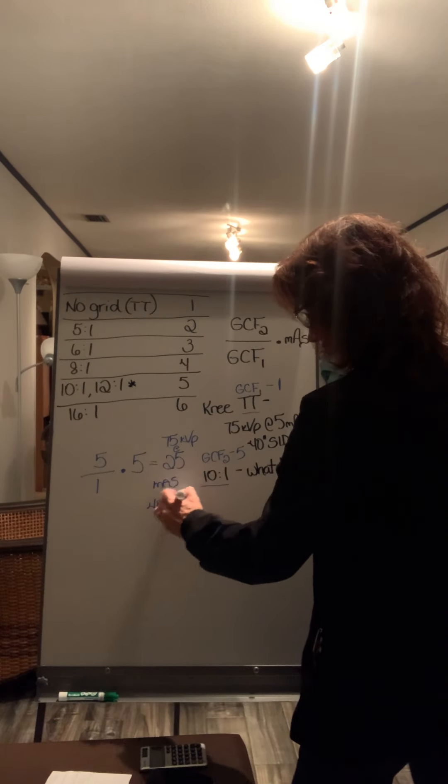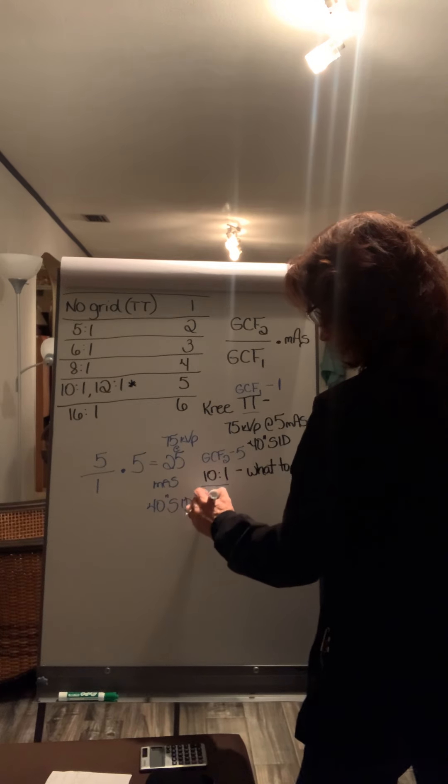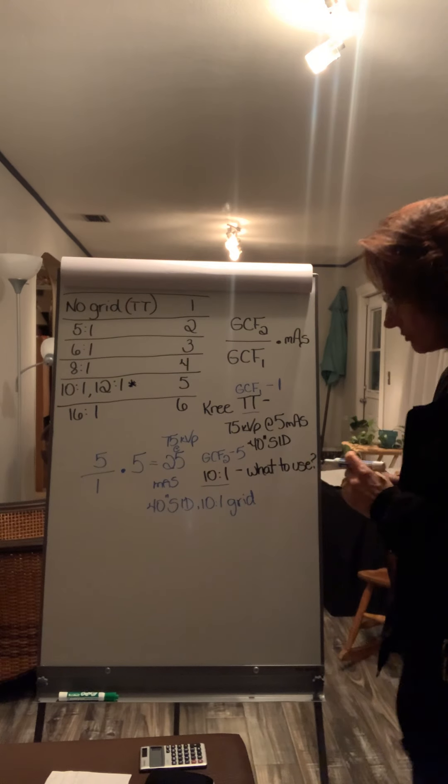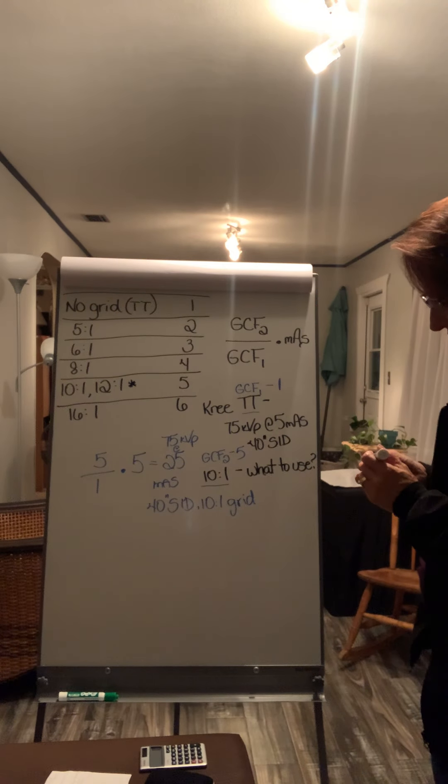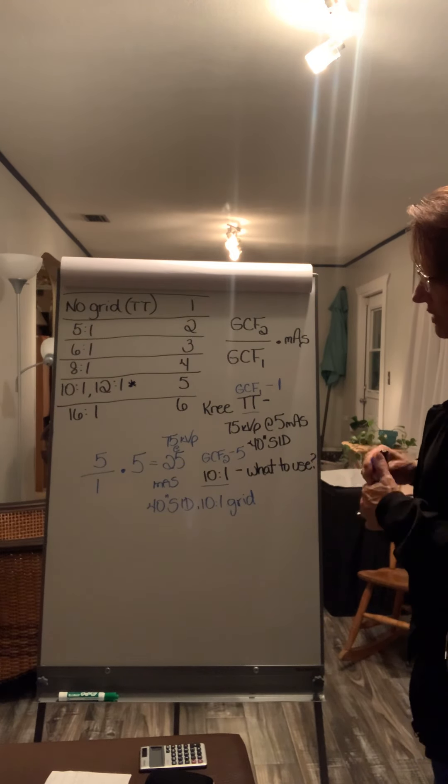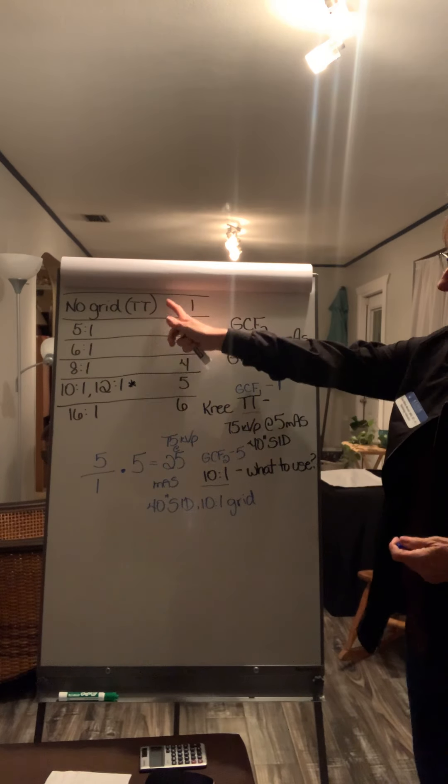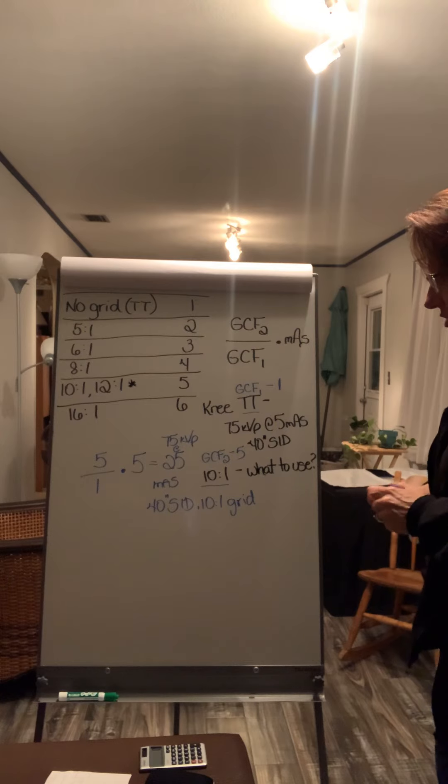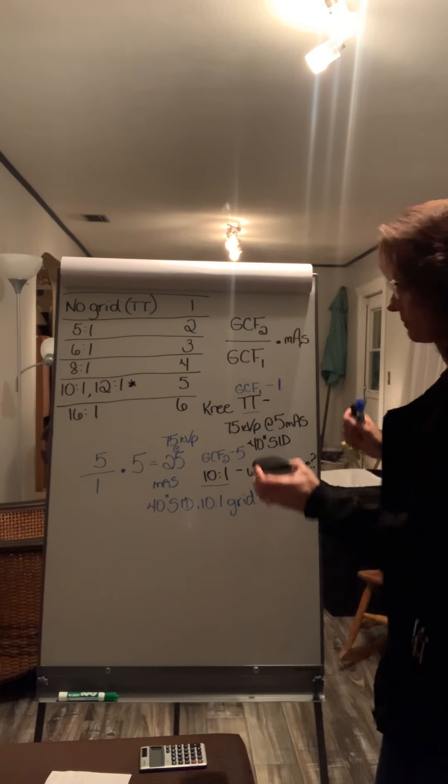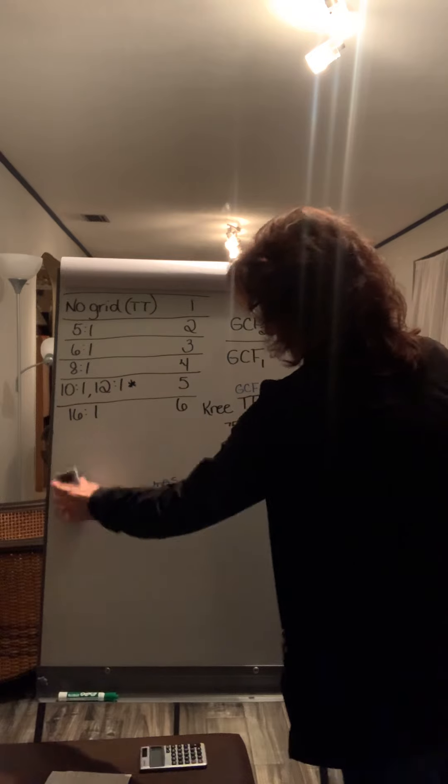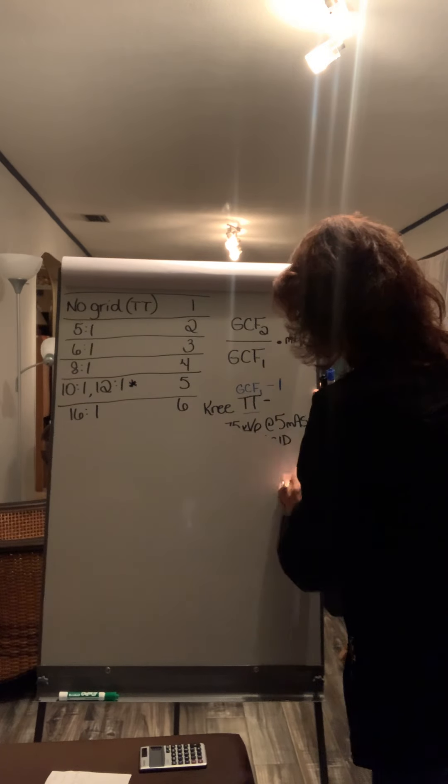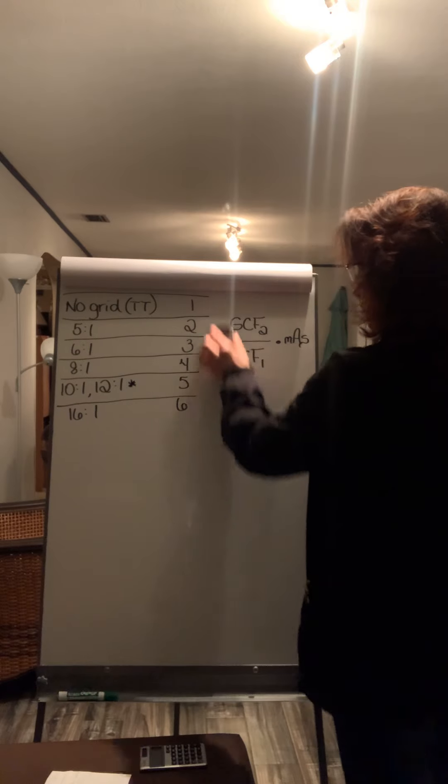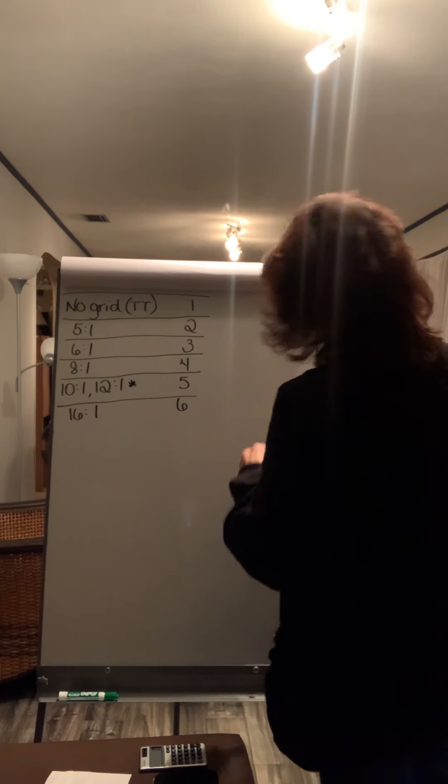So you need to be utilizing a 10 to one grid. So it just tells you the conversion you need to make when going from either no grid to a grid or changing between grid ratios. Let's try another one together. All right. Let me just write this smaller over here so we have a little bit more room.